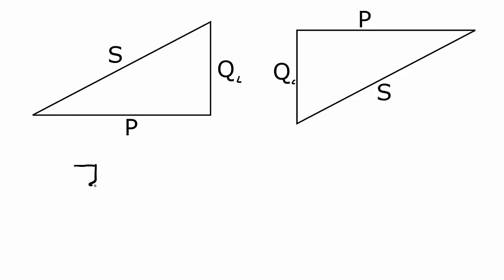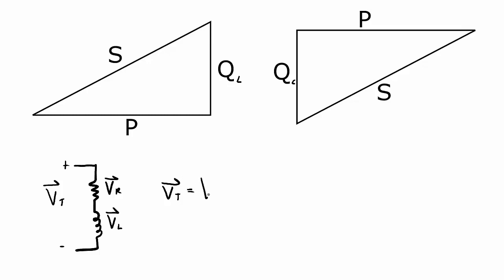We have a resistor and an inductor in series. In this simple circuit we have three different voltages we can look at as vectors: the voltage across the resistor, the voltage across the inductor, and the total voltage. We look at these as vectors because these are AC voltages that have a magnitude as well as a phase shift. From Kirchhoff's voltage law, the total voltage equals the voltage across the resistor plus the voltage across the inductor.